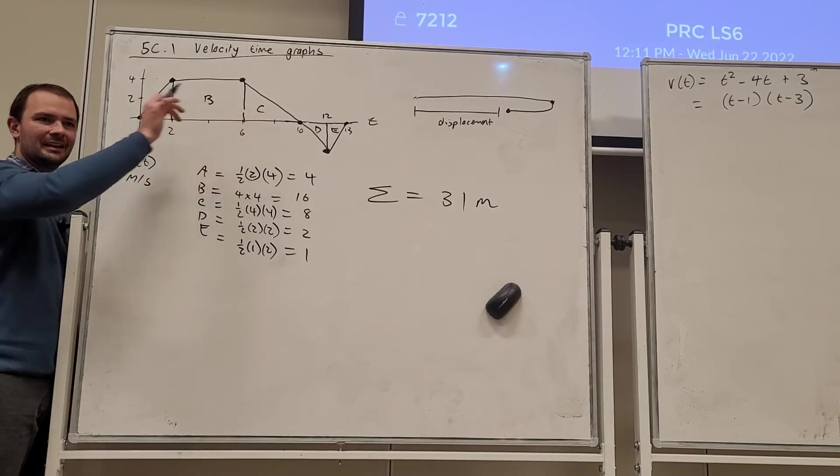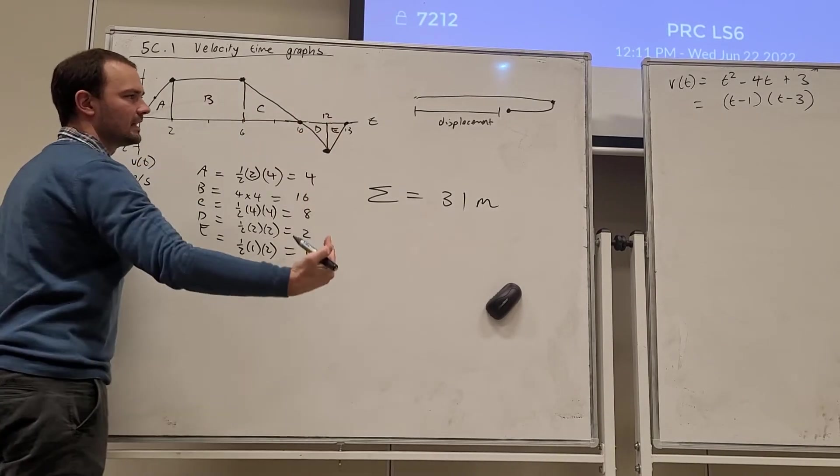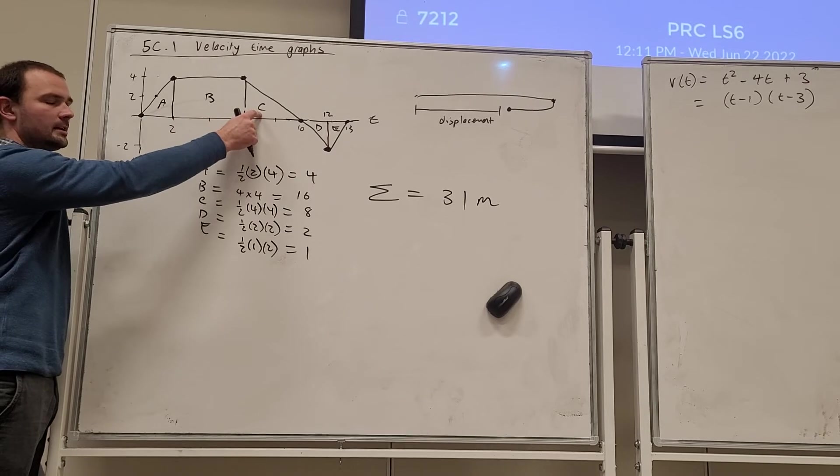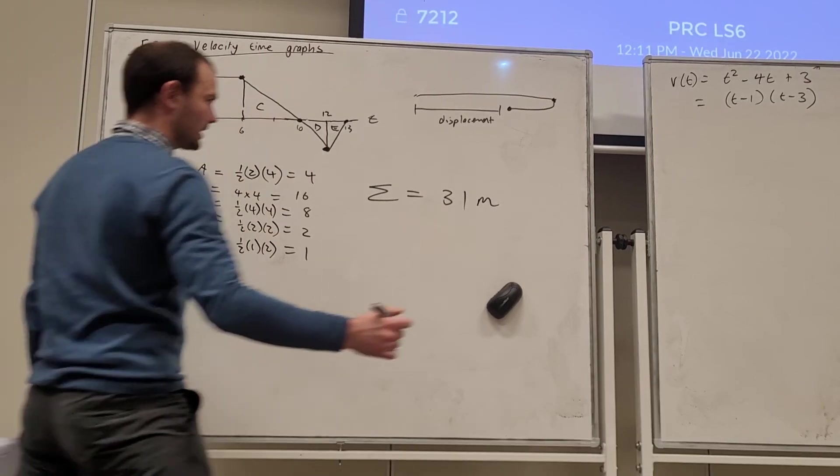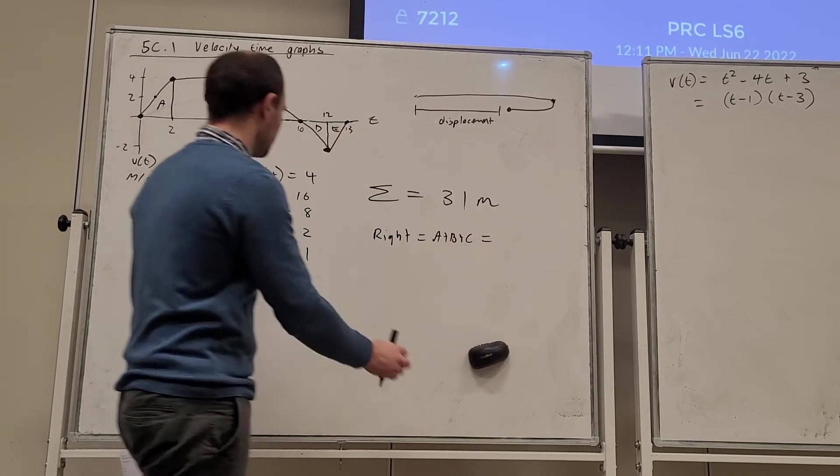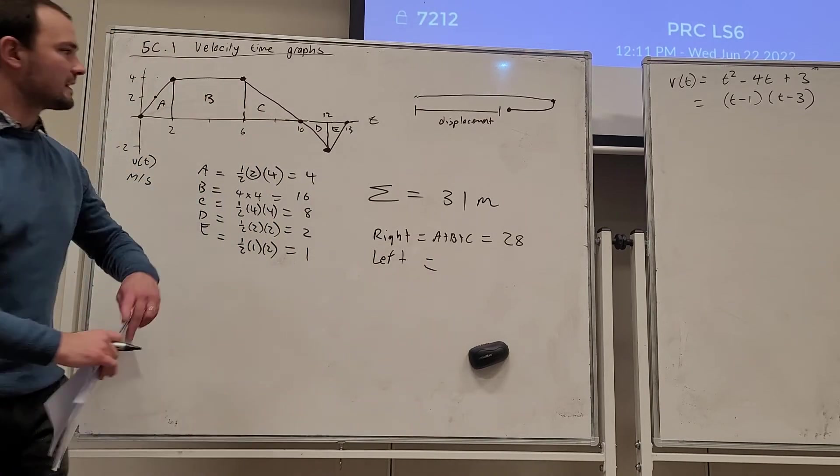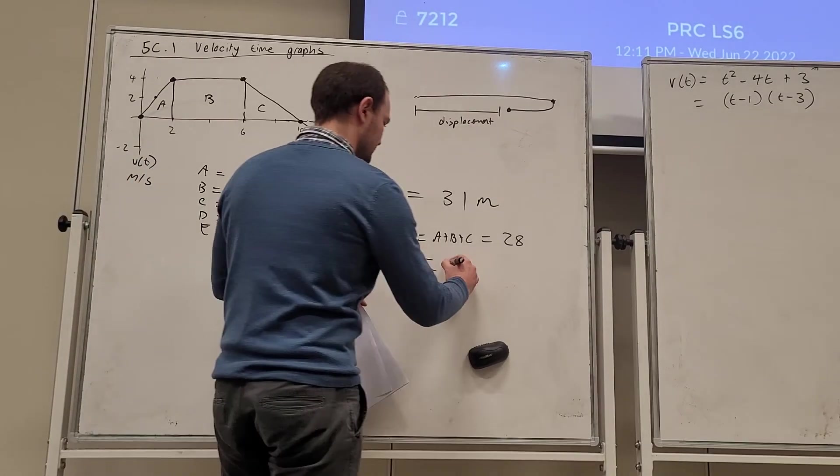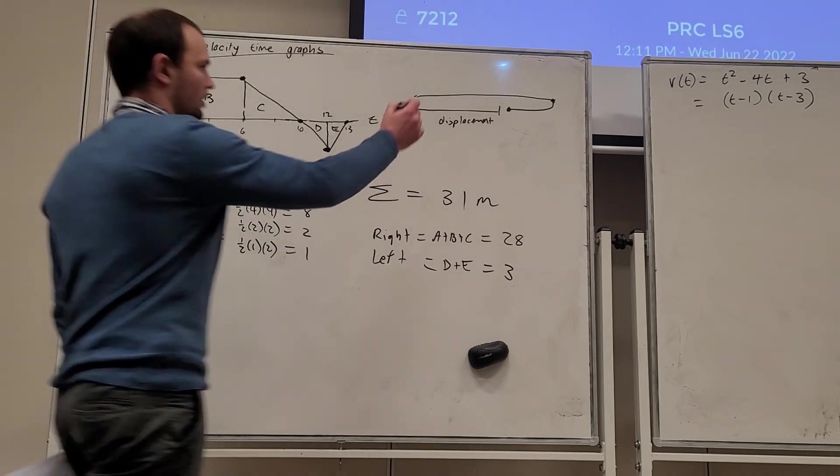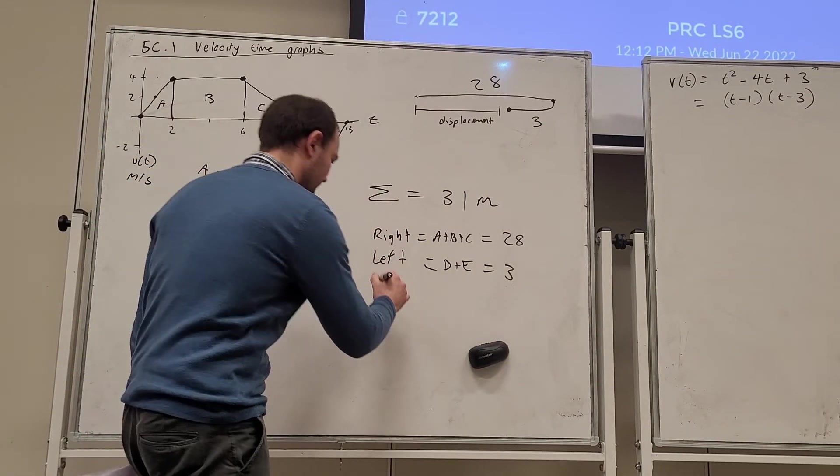Area above the curve is distance to the right, and above the x-axis, and area below the x-axis is distance to the left. So if we want to know how far has it moved to the right, that's going to be A plus B plus C. So we can make that argument. Move to the right. A plus B plus C. There, the segment above the x-axis. So that's going to be 28. How far has it moved to the left? That's going to be the segments below the x-axis. D and E. Three. So if it moves 28 units to the right, and then three units to the left, its displacement is 25 metres.